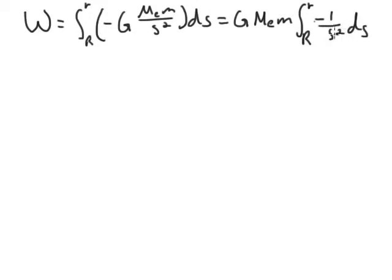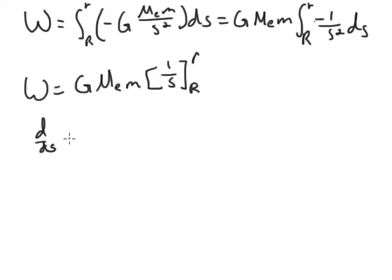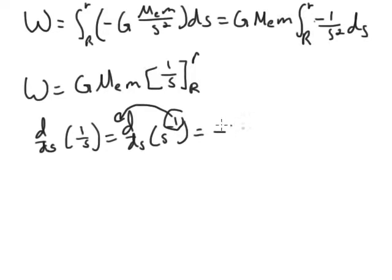Now we have to figure out what the antiderivative of minus 1 over S squared is, and that is going to be 1 over S. We can see that here. If we take the derivative of 1 over S, so d/dS of 1 over S, you pull down the negative 1, so you get minus, and then you subtract 1 from that, so it's going to be minus 1 S to the minus 2 equals minus 1 over S squared.